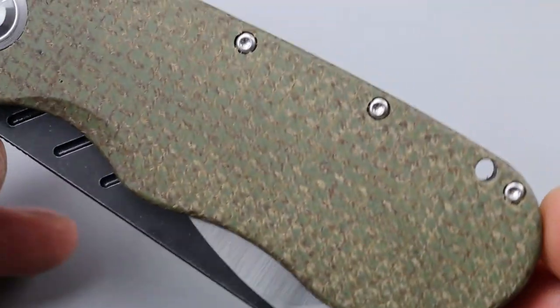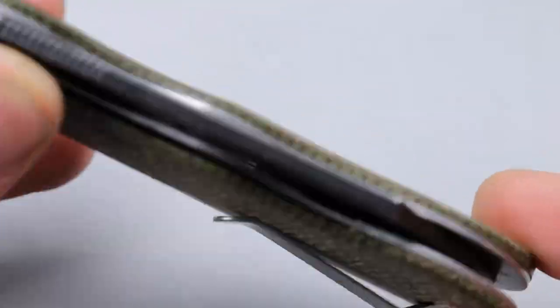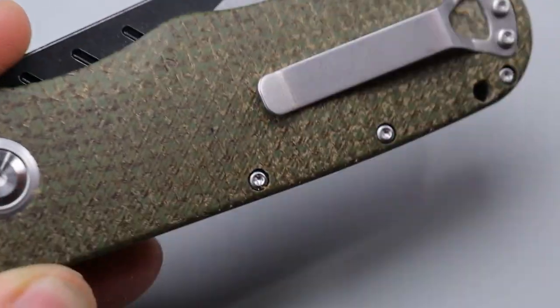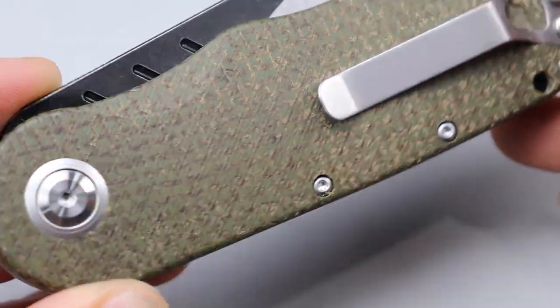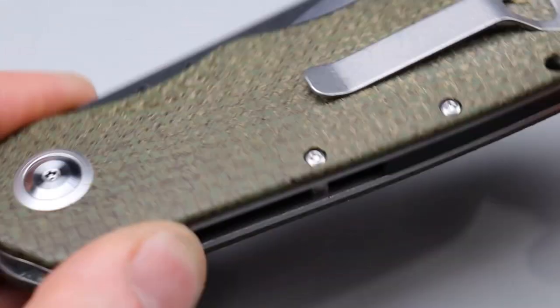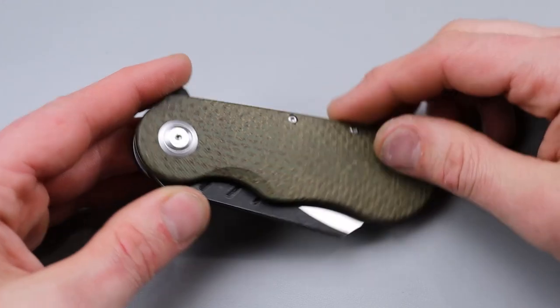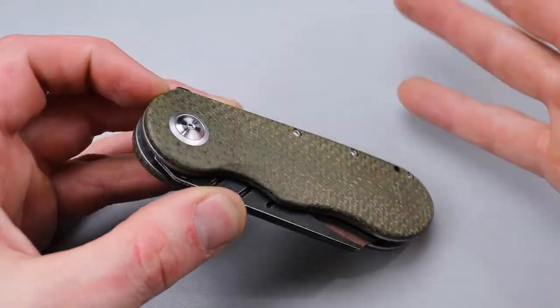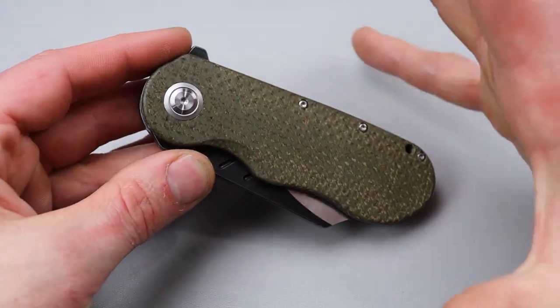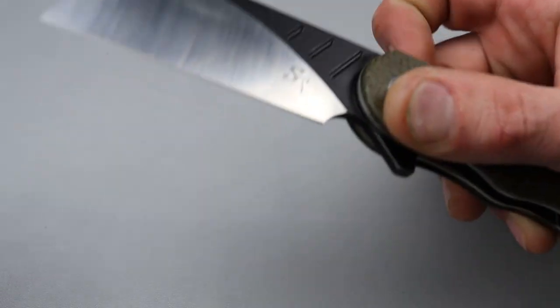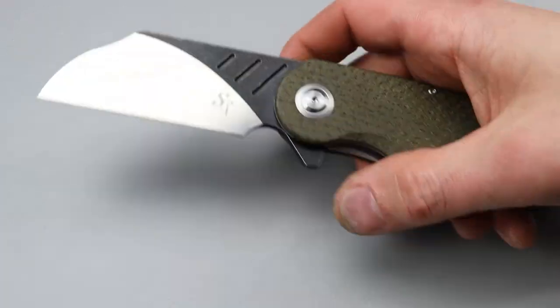Whatever this micarta is, it's got some machining lines on there and it kind of looks cool with the machine lines. It's probably not going to do it as much justice as with the naked eye, but you can see the machine lines going at an angle, plus you have the micarta layered in a way so you can see the fibers.